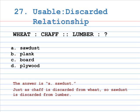Number 27: usable is to discarded relationship. Weed is to chaff, as lumber is to A. Sawdust, B. Plank, C. Board, D. Plywood. The answer is A, Sawdust. Just as chaff describes the unused portions of wheat — the seed coverings and other debris separated from the seed — so sawdust is discarded material from timber. Lumber is the usable part.